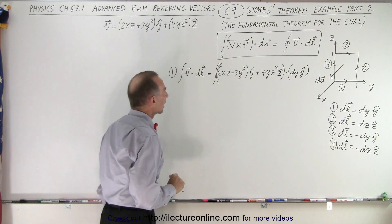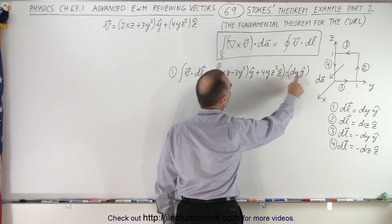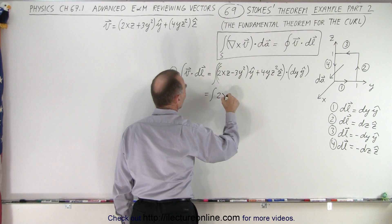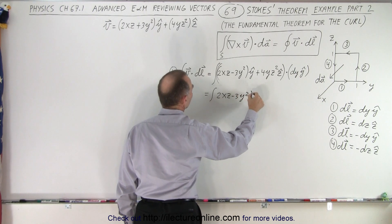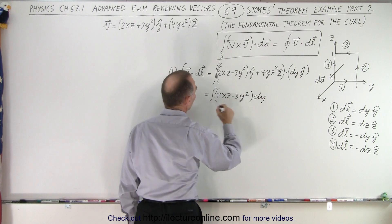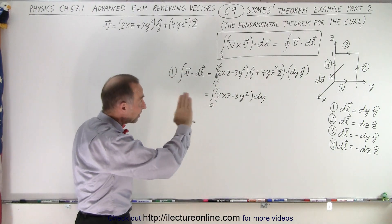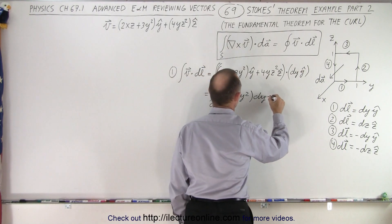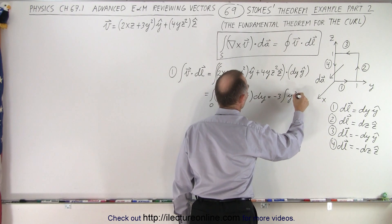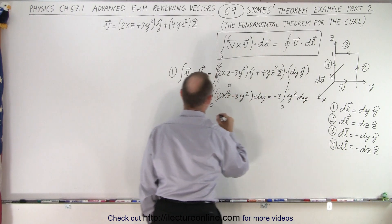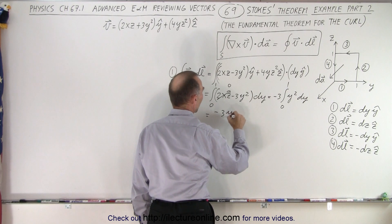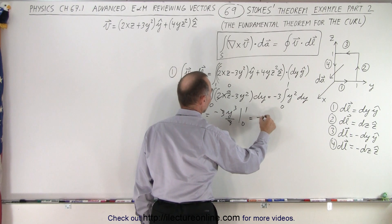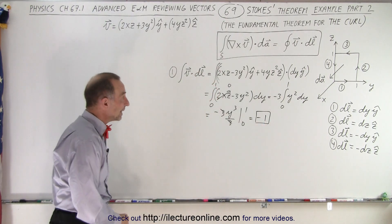For the first DL, notice that we only have a y component, which means the z component will disappear. This becomes the integral of 2XZ minus 3Y squared times DY, and DY changes from 0 to 1. We are along the YZ plane, so X equals 0, making the 2XZ term vanish. This reduces to minus 3 times the integral of Y squared from 0 to 1 DY, which equals minus 3Y cubed over 3 from 0 to 1. The 3s cancel, giving a result of negative 1.